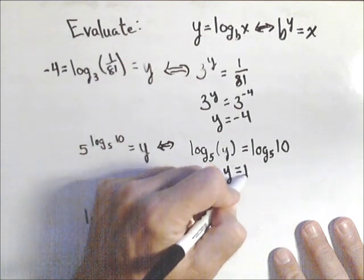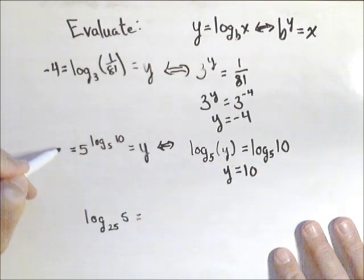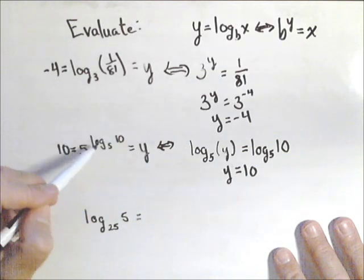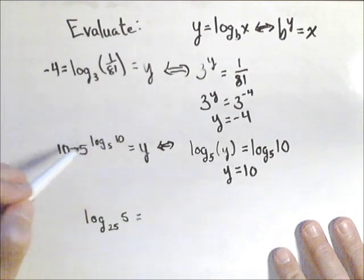That leaves us with y equals 10, so this simplifies down to 10. When you see this, when these bases are the same, they're basically going to cancel and we end up with 10.